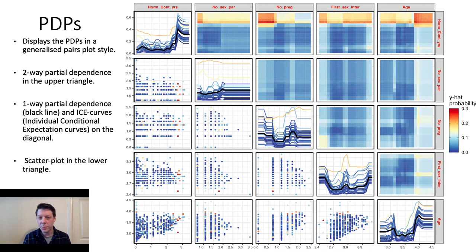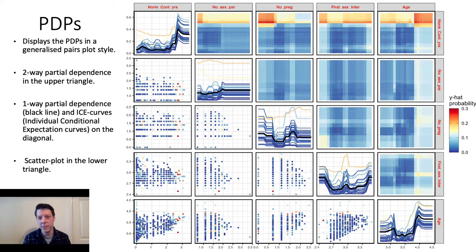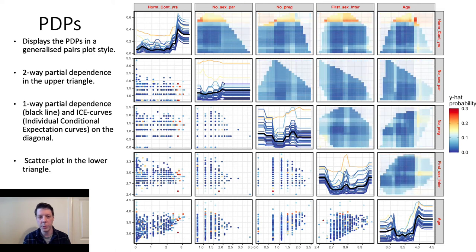Our idea was to display these PDPs in a generalized pairs plot style. In the upper triangle, we have the two-way partial dependence. On the diagonal, we have the individual ICE curves and the one-way partial dependence. In the lower triangle, we have a scatter plot of the data, colored by the predictive values.